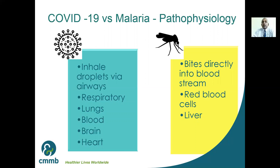With malaria, when the mosquito bites, it introduces the parasite directly into the bloodstream. The red blood cells are a good medium where the parasite is taken up. It is stored sometimes in the liver and undergoes different stages of development, then can be spilled back into the blood for the next mosquito to bite and transmit to someone else.